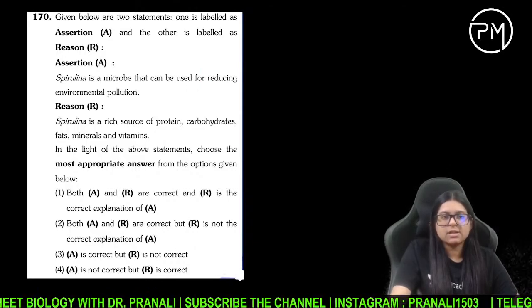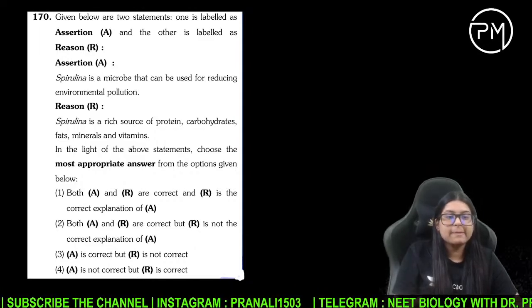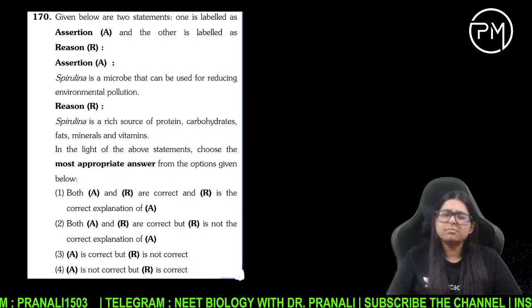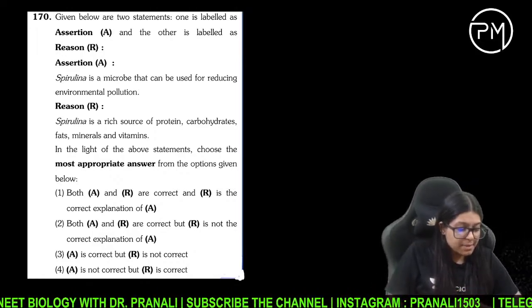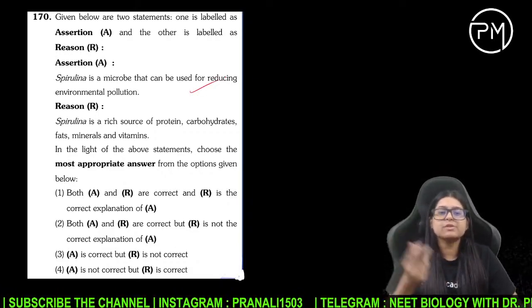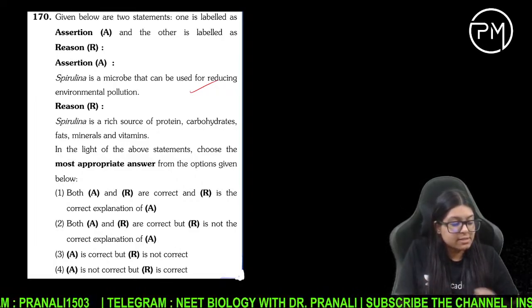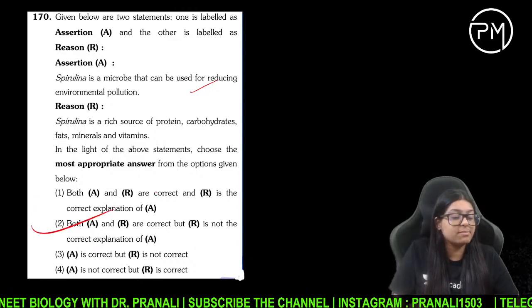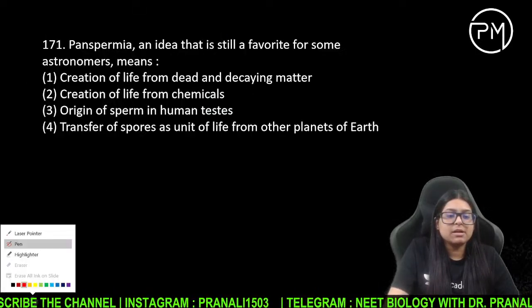Assertion or reason: Spirulina environmental pollution ko reduce karta hai kya? Spirulina protein source hai — carbohydrate, fat, mineral, vitamin. Yahan par pehla statement bhi sahi hai ki haan environment ki pollution reduce karta hai — single cell protein hai. Reason bhi sahi hai par reason usko explain nahi kar pa raha. Pan spermia ke baare mein batayiye — pan spermia matlab baahr se Earth pe koi spore aaya, kuch life lekar aaya — transfer of spores as a unit of life from other planet to the Earth.